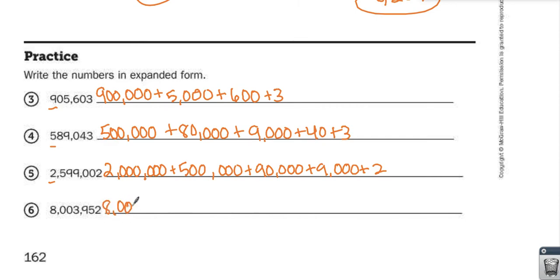8,000,000, move to the 1,000s place, 3,000, plus 9,000, plus 50, plus 2.